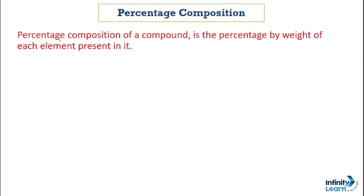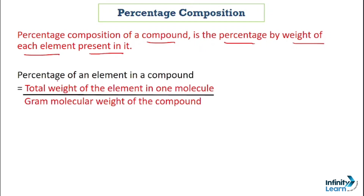So let's move towards today's first topic — percentage composition. Percentage composition of a compound is the percentage by weight of each element present in it. This formula tells us the percentage of an element in a compound, which is the total weight of the element in one molecule divided by the gram molecular weight of the compound.